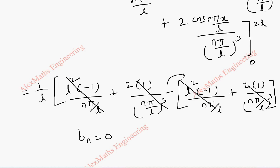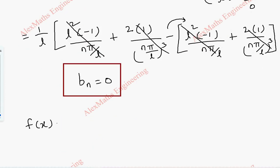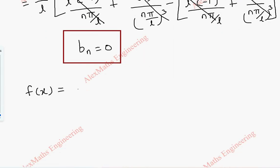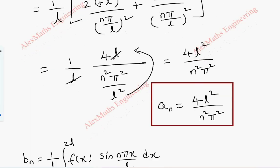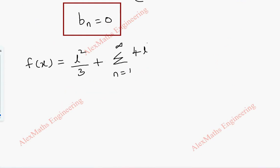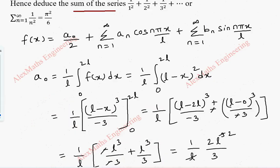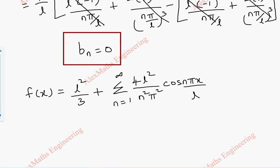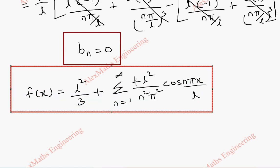So we got a_n and b_n, and before that we got a0. Now substituting into the Fourier expansion formula: f(x) = a0/2 + summation. a0 = 2L²/3, divided by 2 gives L²/3. Plus summation n=1 to infinity of a_n × cos(nπx/L), which is (4L²/n²π²) cos(nπx/L). Since b_n = 0, we drop the last term. This is the required Fourier series expansion.